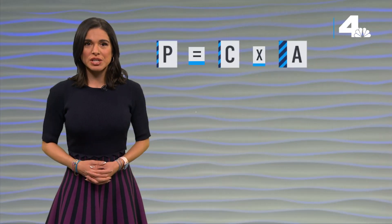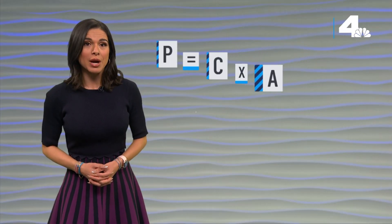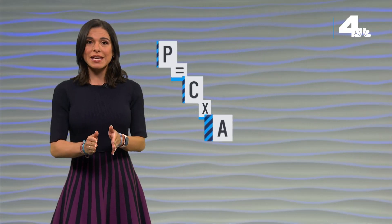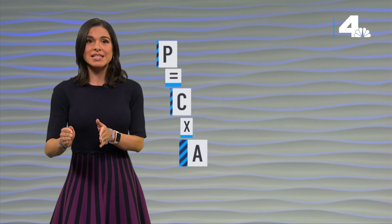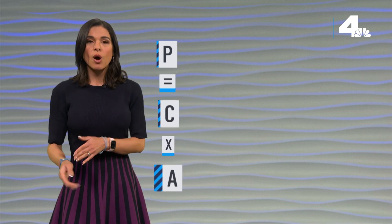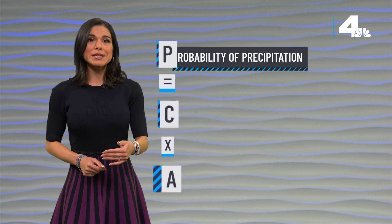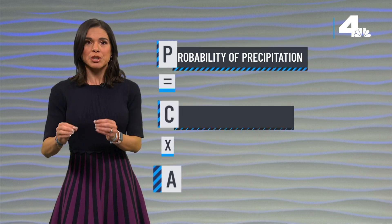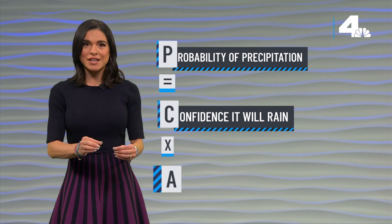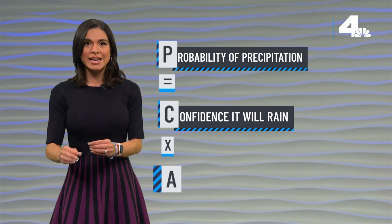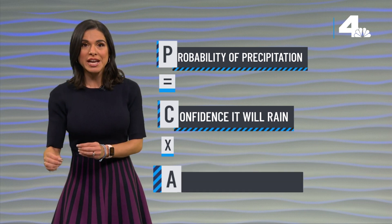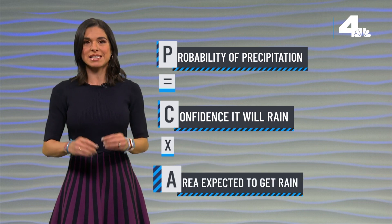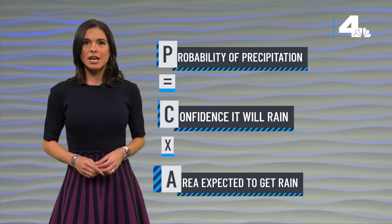One simple equation used among meteorologists to get this percentage is P equals C times A — the probability of precipitation equals the meteorologist's confidence that it will rain, times the percentage of the area that is expected to get rainfall.